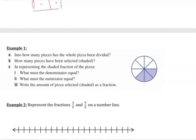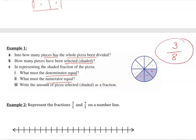Let's do an example. How many pieces has the whole pizza been divided into? One, two, three, four, five, six, seven, eight. So there's eight pieces. That's the total number of possibilities, because that's what I've divided that one whole pizza into. How many pieces have been selected, in this case shaded? One, two, three. Three out of the eight have been selected. So the denominator is equal to eight, because that's the total number. The numerator is equal to three, because that's what we've selected out of those eight.